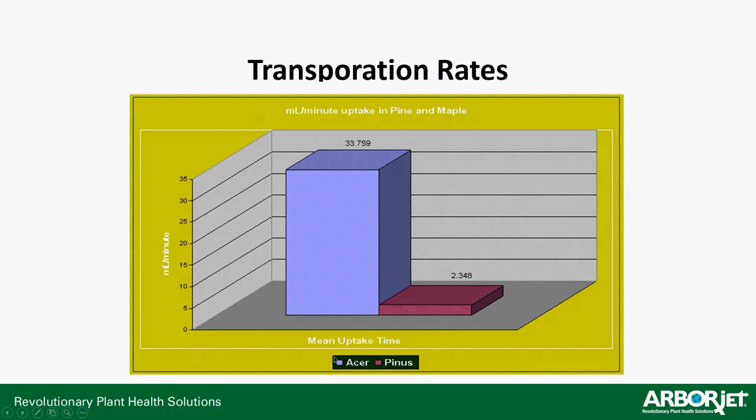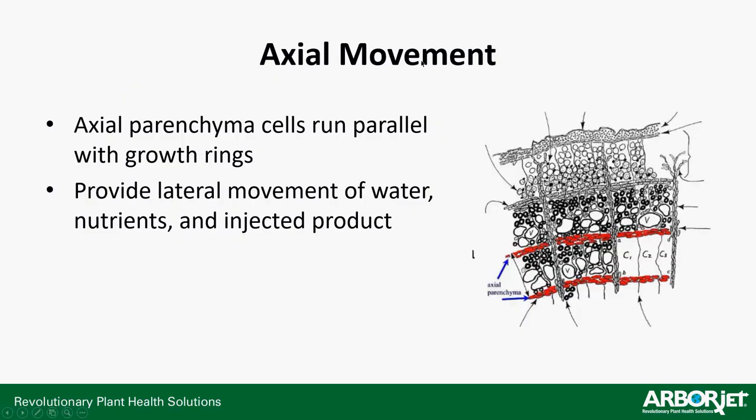Along with vertical movement up vessels, there's axial parenchyma — cells that run parallel to growth rings, allowing product to move sideways. This is how water, nutrients, and product can get by a compartmentalized section of a tree. Product moving up an ash tree's vessel cells will hit a compartmentalized area, shift laterally via axial parenchyma, find active xylem tissue, and head back up — spreading out sideways as it goes. The lower on the tree the injection site, the more time product has to move sideways as it travels up throughout the trunk.